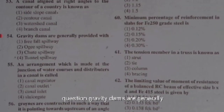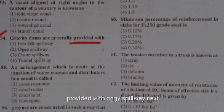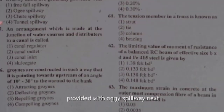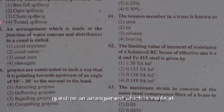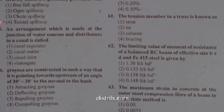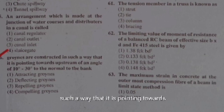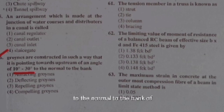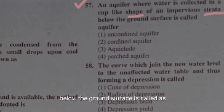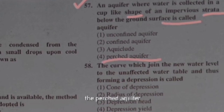A canal aligned at a right angle to the contour of the country is known as a side slope canal. Gravity dams are generally provided with an ogee spillway. An arrangement made at the junction of water courses and distributors in a canal is called canal outlets. Groins are constructed pointing upstream at an angle of 10 to 30 degrees to the normal bank, repelling groins.